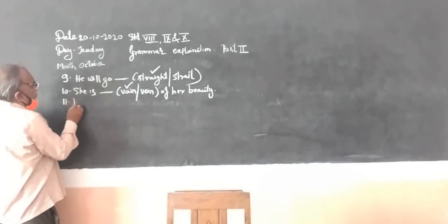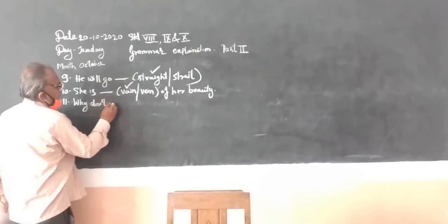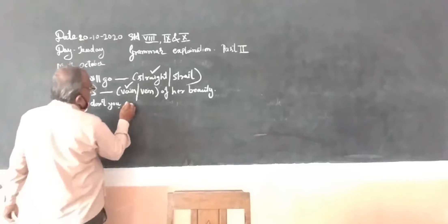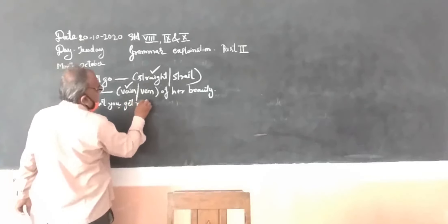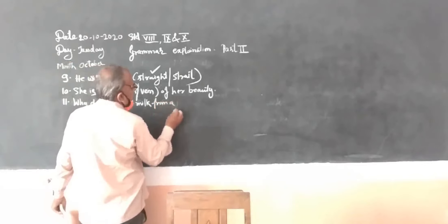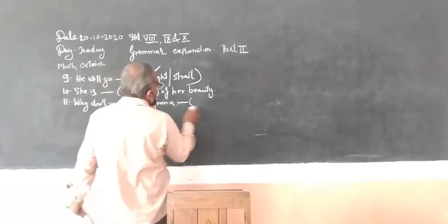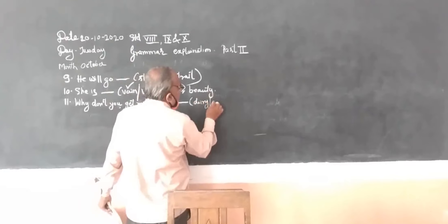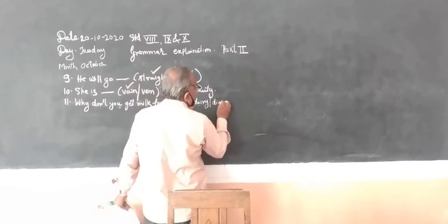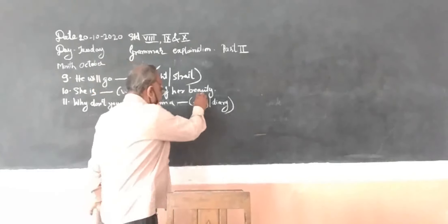Eleventh one: why don't you get W-E-A-K weak, W-E-E-K week, from a D-A-I-R-Y dairy oblique D-I-A-R-Y diary. This is dairy, this is diary. Dairy means where you get milk. So it is this dairy.